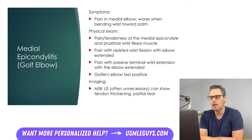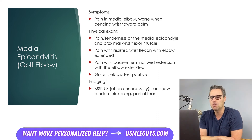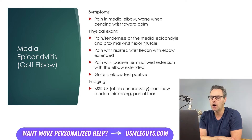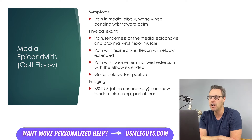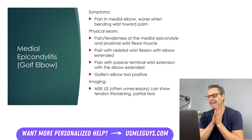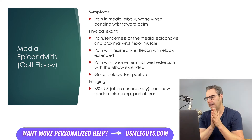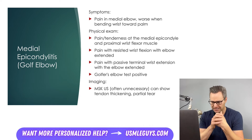Let's move on to medial epicondylitis, also known as golfer's elbow. Pain in this condition is felt at the medial aspect of the elbow and is made worse with bending the wrist toward the palm. On exam, the patient will report tenderness to palpation of the medial epicondyle and possibly the proximal wrist flexor muscles. They will also have pain with resisted wrist flexion when the elbow is extended, as well as pain with passive terminal wrist extension — meaning the physician moving the wrist to its maximum point of extension, causing pain.